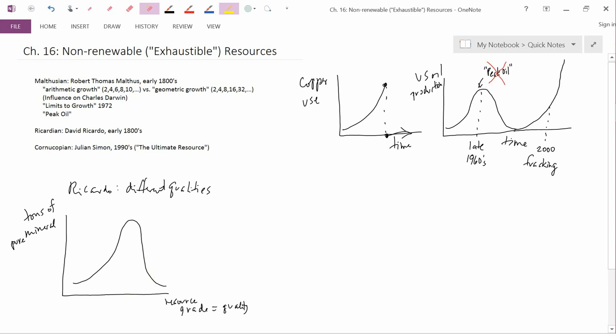The main point, though, that the Ricardians make is that the horizontal axis is a whole axis. It's not just one resource grade and then you run out, as the Malthusians might say. But instead, you would gradually run out. First, you'd run out of the good stuff, and then you'd run out of the medium stuff, and then you'd have to work with the low-quality material.